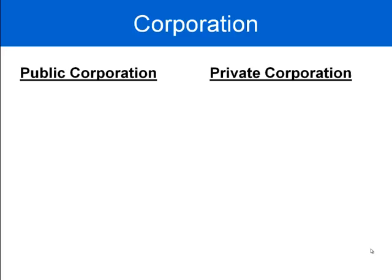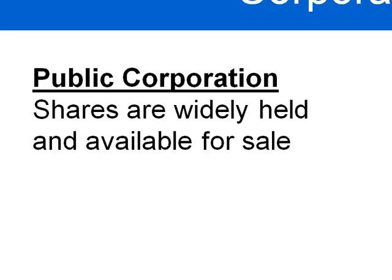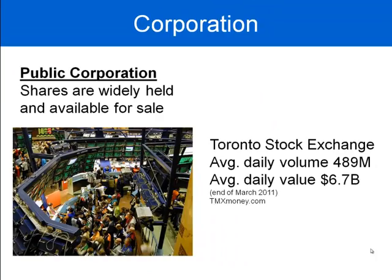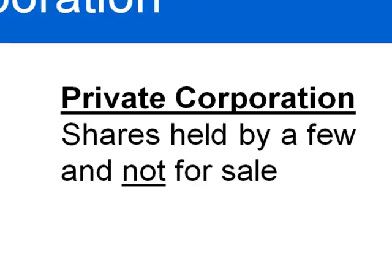There are two types of corporations we'll look at: the public corporation and the private corporation. In a public corporation, shares are widely held and available for sale to the general public. A good example would be the Toronto Stock Exchange — at the end of March 2011, the average daily volume on the Toronto Stock Exchange was 489 million shares.